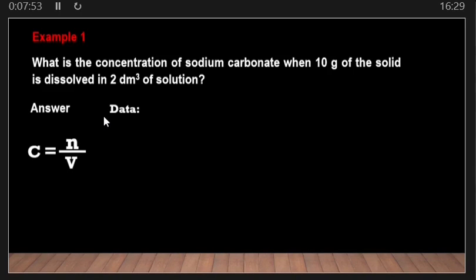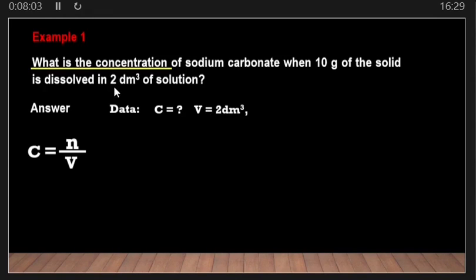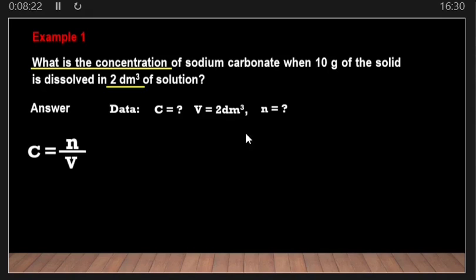According to the information given, concentration is what we need to find. Volume is given as 2 cubic decimeters. We need the number of moles, which is not directly given. However, we are given the mass — 10 grams — and from the mass it is possible to find the number of moles, because we have a formula that relates mass to number of moles.